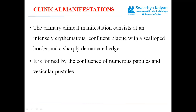Now, clinical manifestations. The primary clinical manifestation consists of intensely erythematous confluent plaques with a scalloped border — meaning a border marked with semi-circles — and a sharply demarcated edge. These are formed by the confluence of numerous papules and vesicular pustules.